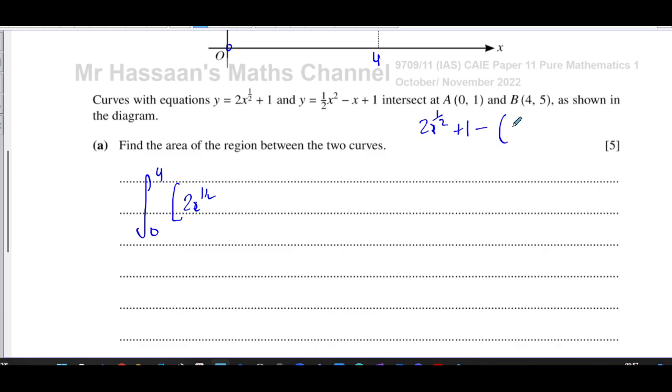If you just write it out here: 2x to the power half plus 1 minus (a half x squared minus x plus 1), you get 2x to the power half, there's no like term here. 1 minus 1 is zero so they cancel out. You have minus a half x squared and then plus x. That has to be integrated between those limits, and that is going to give us the area that we're looking for.